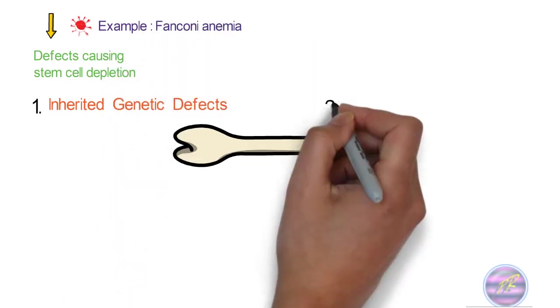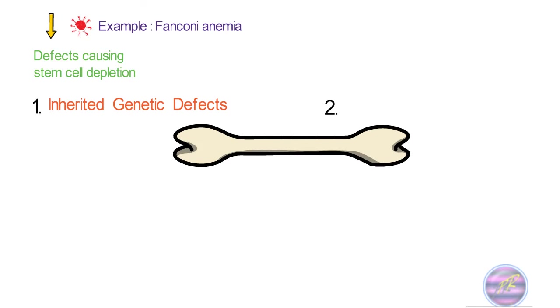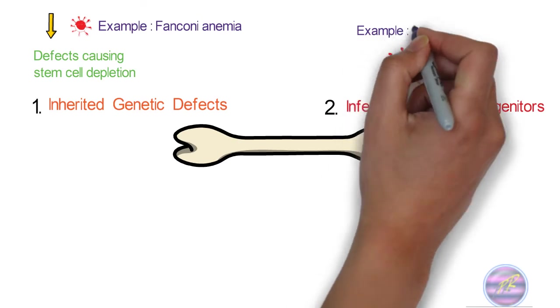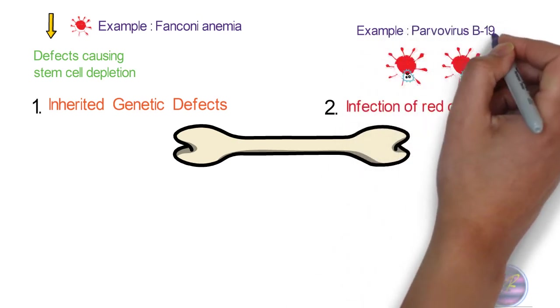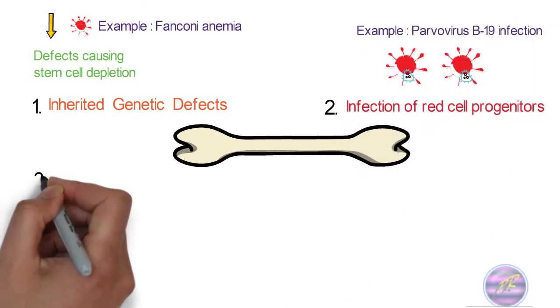The second cause is the infection of red cell progenitors in the bone marrow. For example, Parvovirus B19 infection.